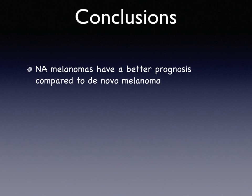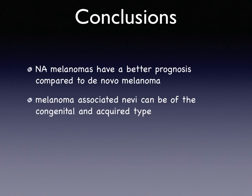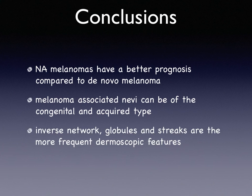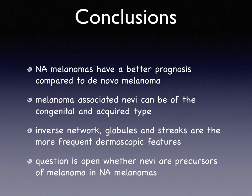In conclusion: nevus-associated melanomas have a better prognosis compared to de novo melanoma. Melanoma-associated nevi can be of the congenital and acquired type. Inverse network, globules, and streaks are the more frequent dermoscopic features of nevus-associated melanoma. And the question remains open whether nevi are precursors of melanoma in nevus-associated melanomas.